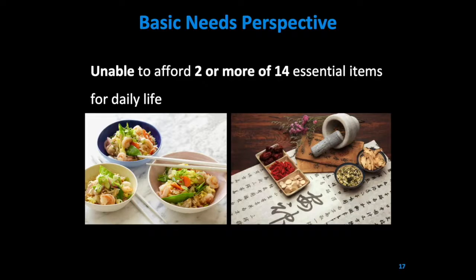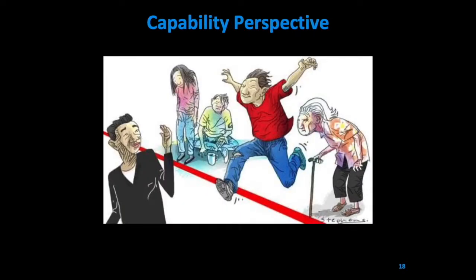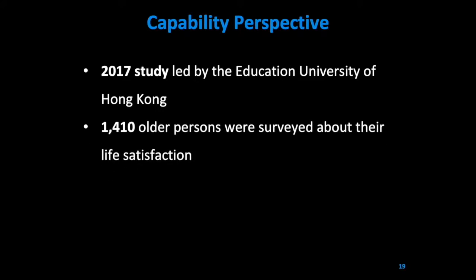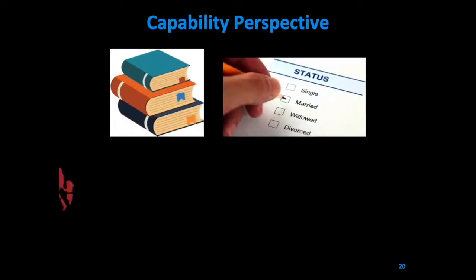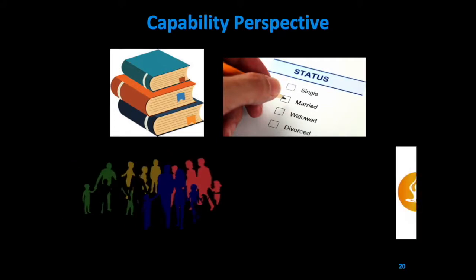Lastly, the capability perspective focuses on what people are able to be and do, instead of what they have or how they feel. This includes a person's capability to live in good health and have loving relationships with others. In a 2017 study conducted by the Education University of Hong Kong, 1,410 older persons were surveyed about their life satisfaction. They found that the connection between expenditure-based poverty and life satisfaction was the strongest. Other factors included education and marital status, close family members and friends, self-rated health, and functional capacity.